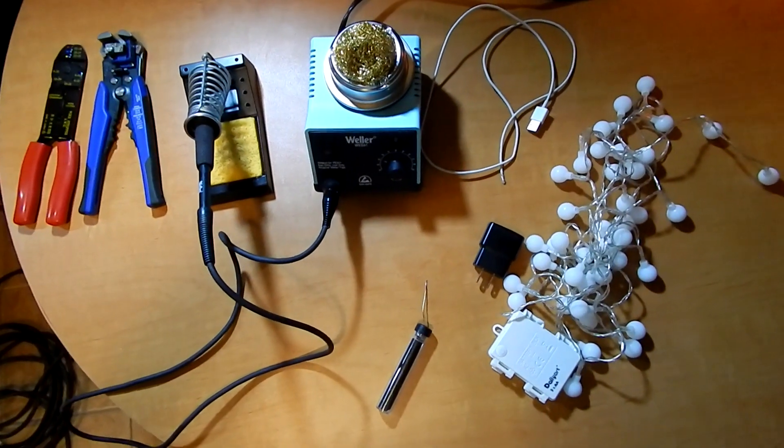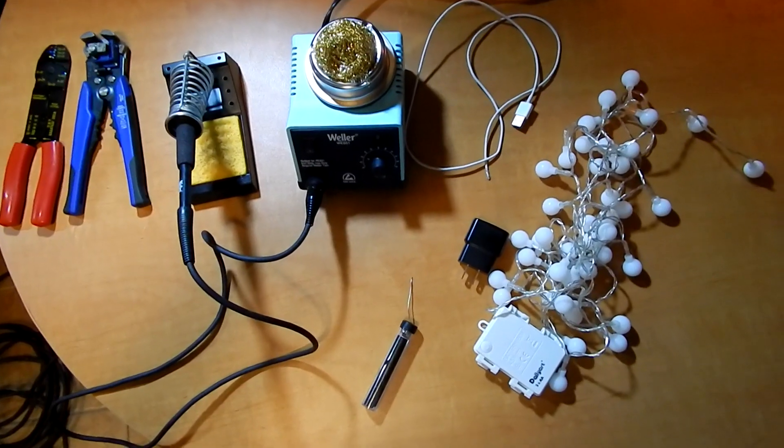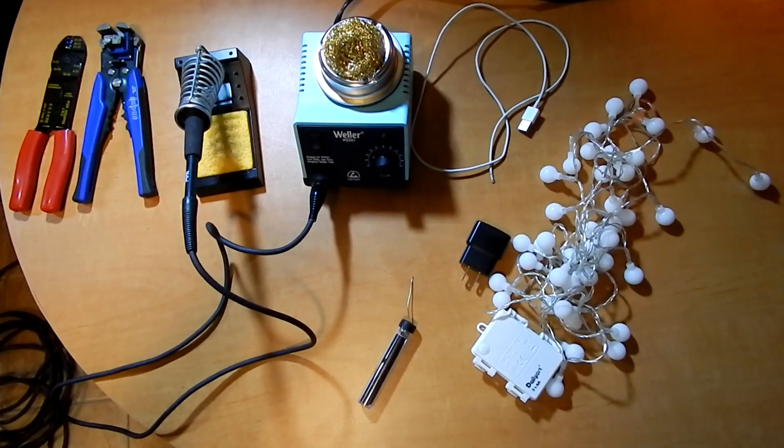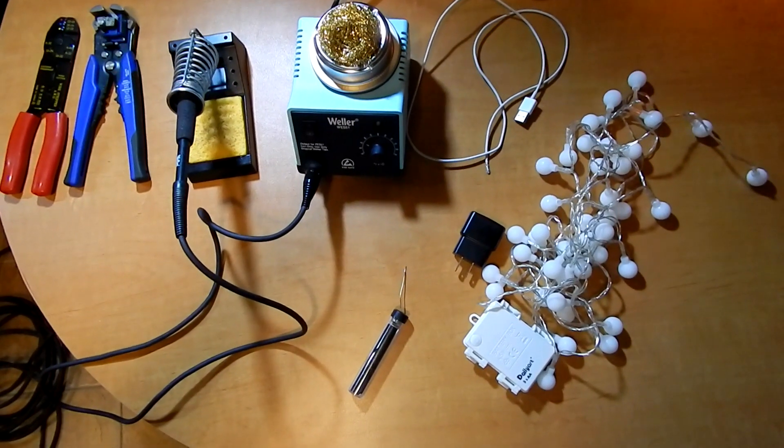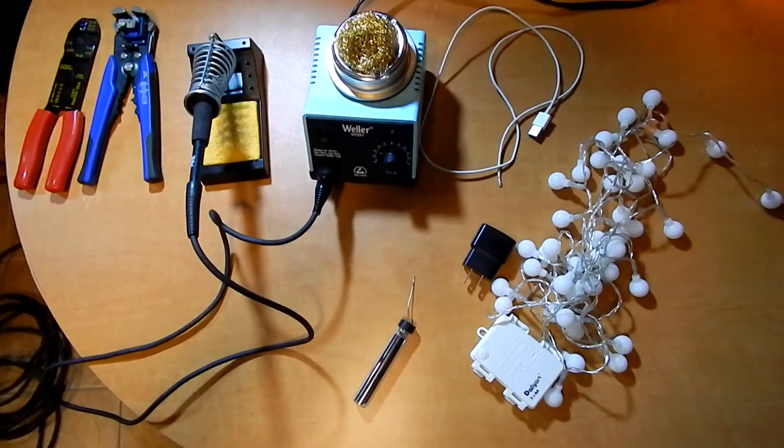Alright, what's up guys, today I'll be showing you how to turn these cheap Amazon battery-powered lights into lights that you can plug into a wall, so you don't have to use AA batteries and keep changing them out.